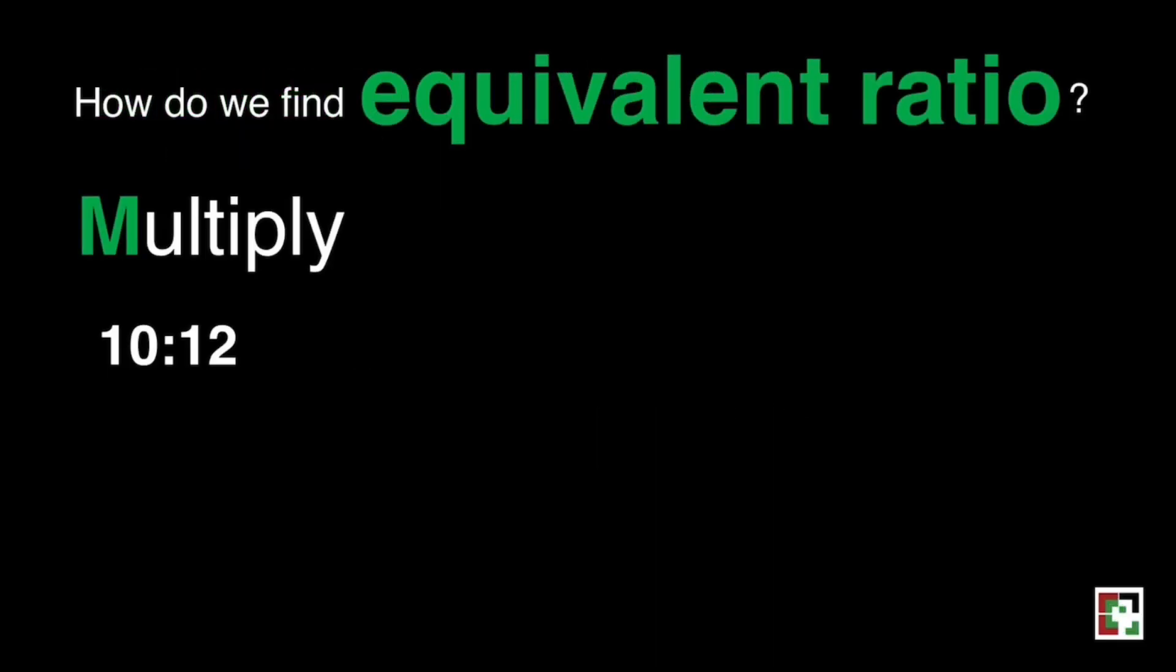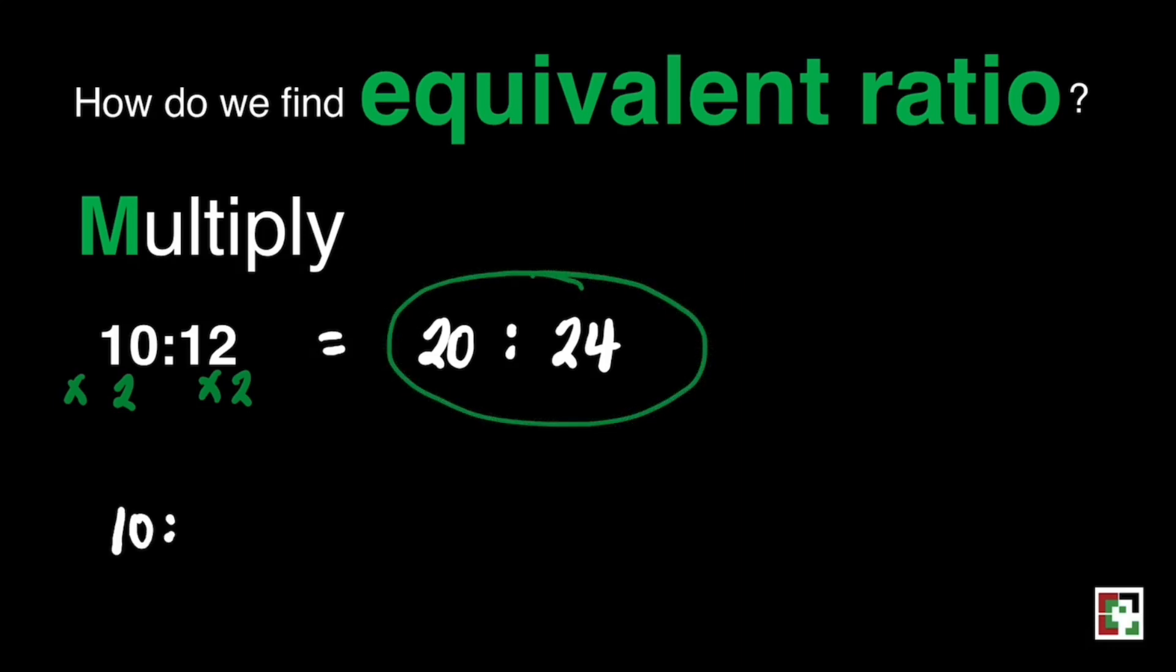Let's try. For example, if you have here 10 is to 12, we can multiply for example 2 to 10 and 12. 10 times 2 and 12 times 2. That will give us 20 and then 24. That is 20 is to 24. But ratio can also be written using fraction.